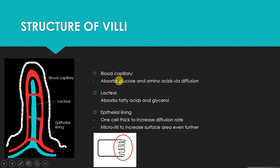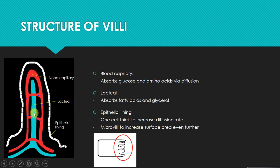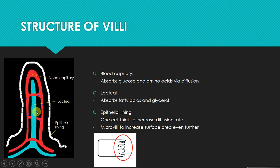Going into a bit more detail about this structure, we have the inner networking of blood capillaries, and we also have a central lacteal, and they serve different purposes. The blood capillaries absorb glucose and amino acids, and the lacteal, which is at the very center of the villus, absorbs fatty acids and glycerol. This all happens via diffusion, where nutrients from outside of the villus diffuse inwards into these structures, passing through what is called an epithelial lining.